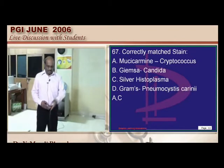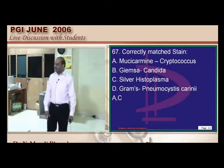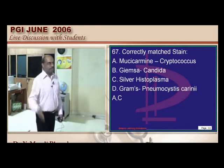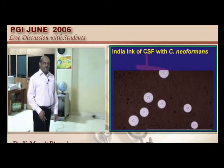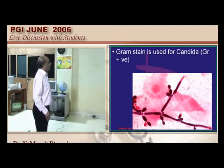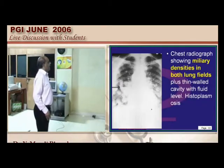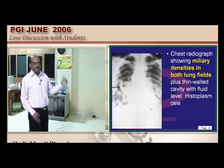Reviewing stains from recent exams: India ink staining is used for Cryptococcus neoformans. Methenamine silver stain is used not only for Pneumocystis carnii but also for Cryptococcus. Candida can be identified with gram staining, where it appears gram positive. A chest radiograph may show miliary densities in both lung fields with a pus-filled walled cavity.